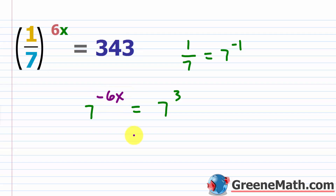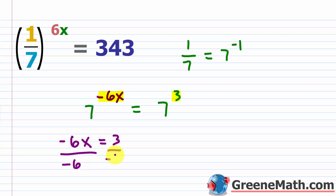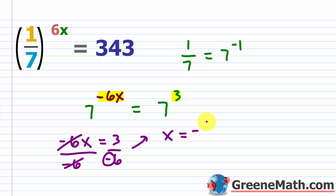Most of the problem is just setting things up. After that, the equation is really simple. Set the exponents equal: negative six x equals three. Divide both sides by negative six. Three over negative six is negative one half, so x equals negative one half.